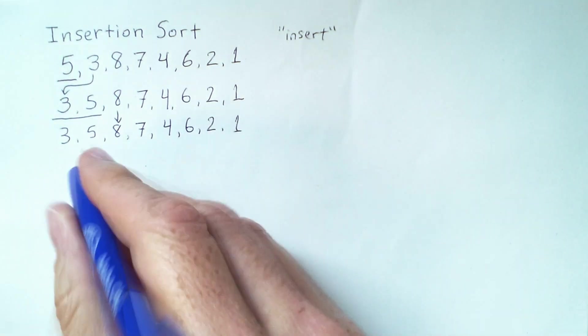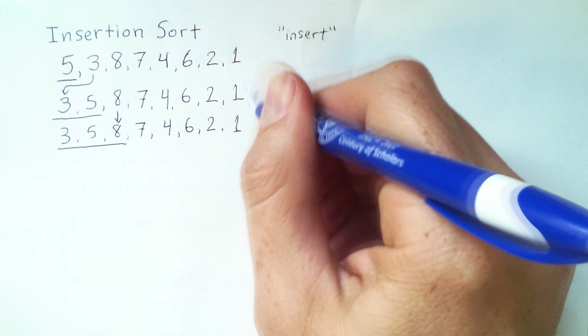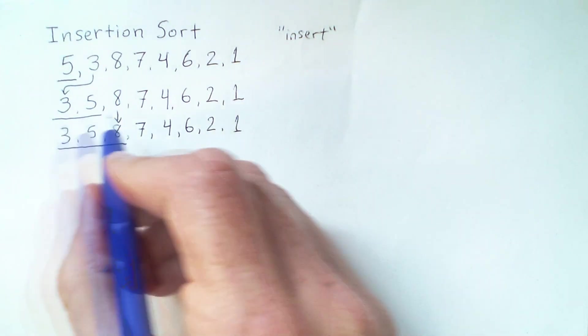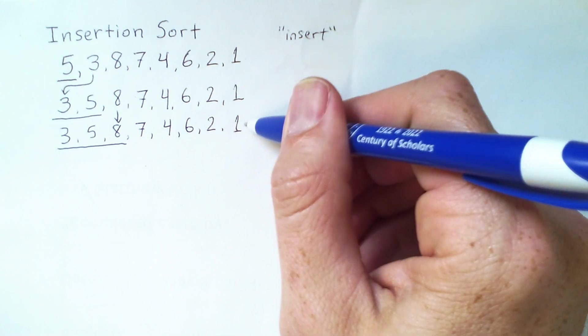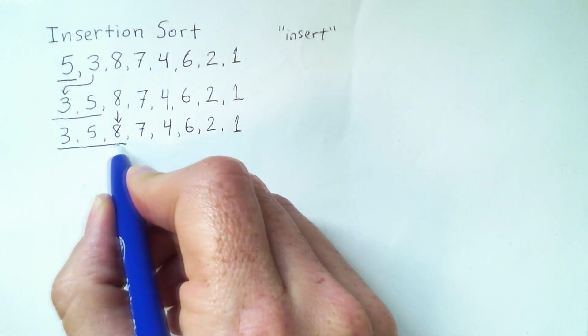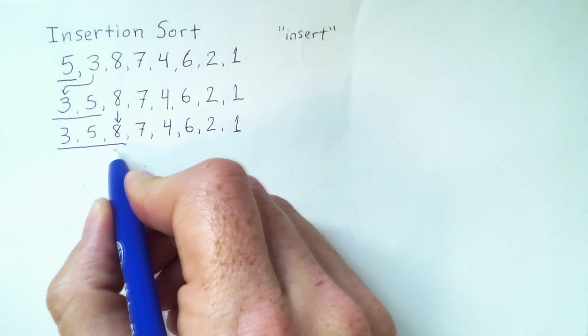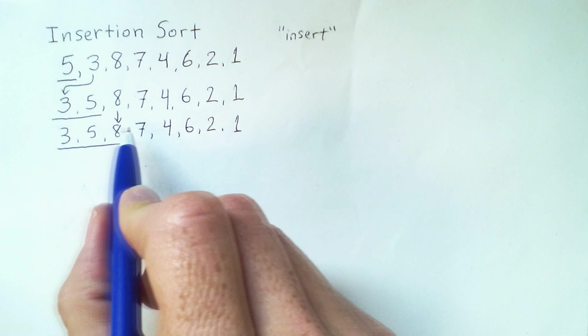And so this is a case where we have two lines of our demonstration of the behavior of the algorithm where the contents are identical. They're different in the sense that 8 is now guaranteed to be in this sorted subregion, but the actual positions of the elements have not changed.